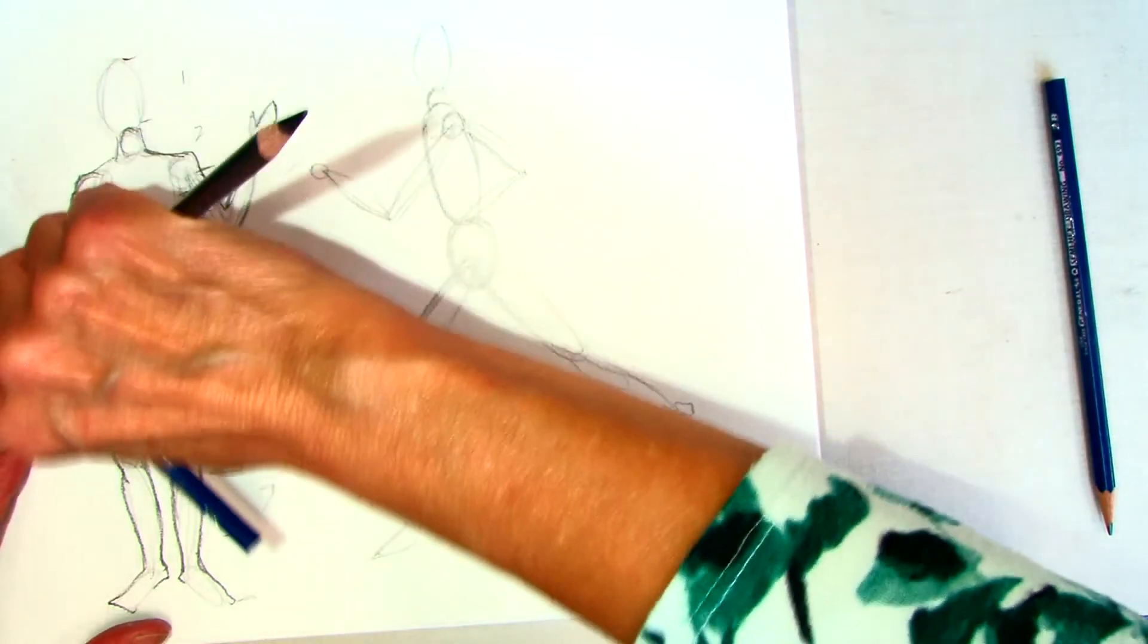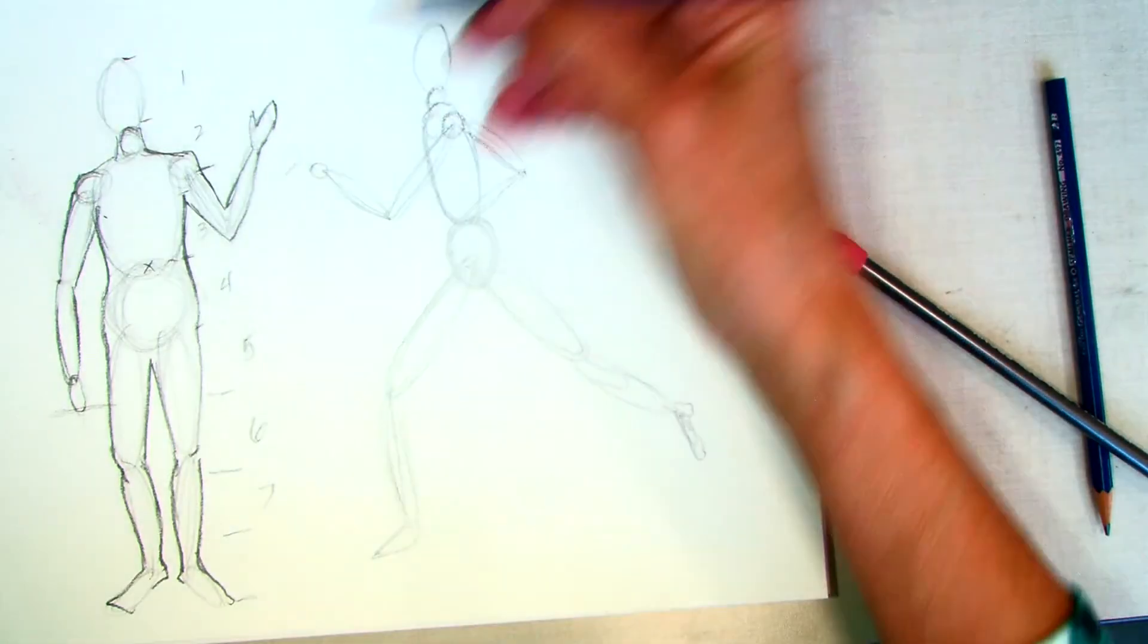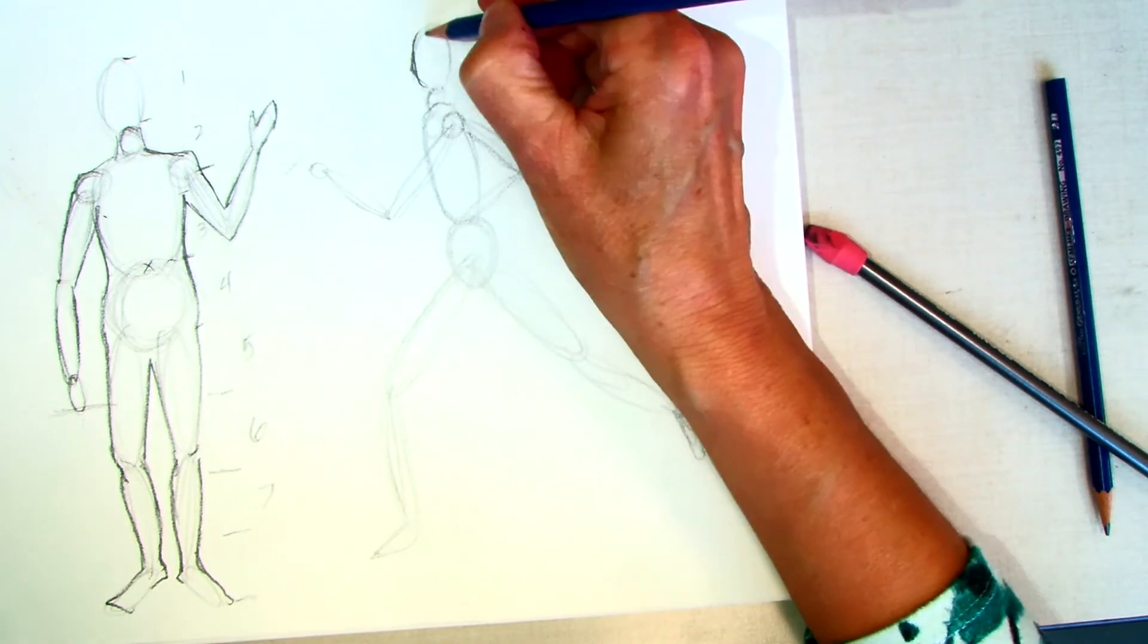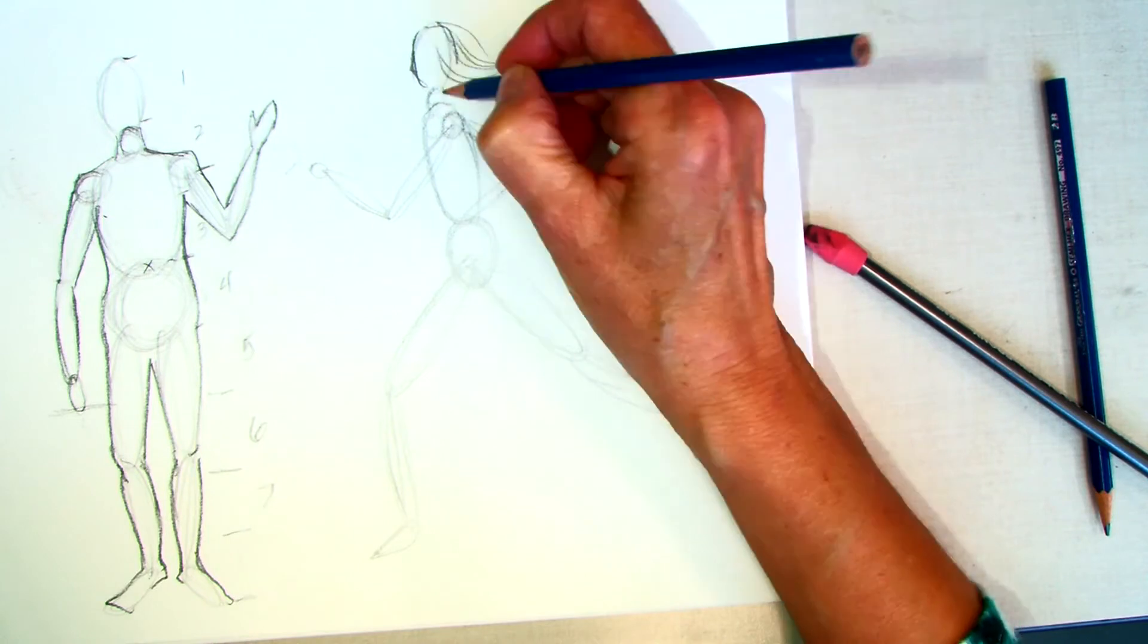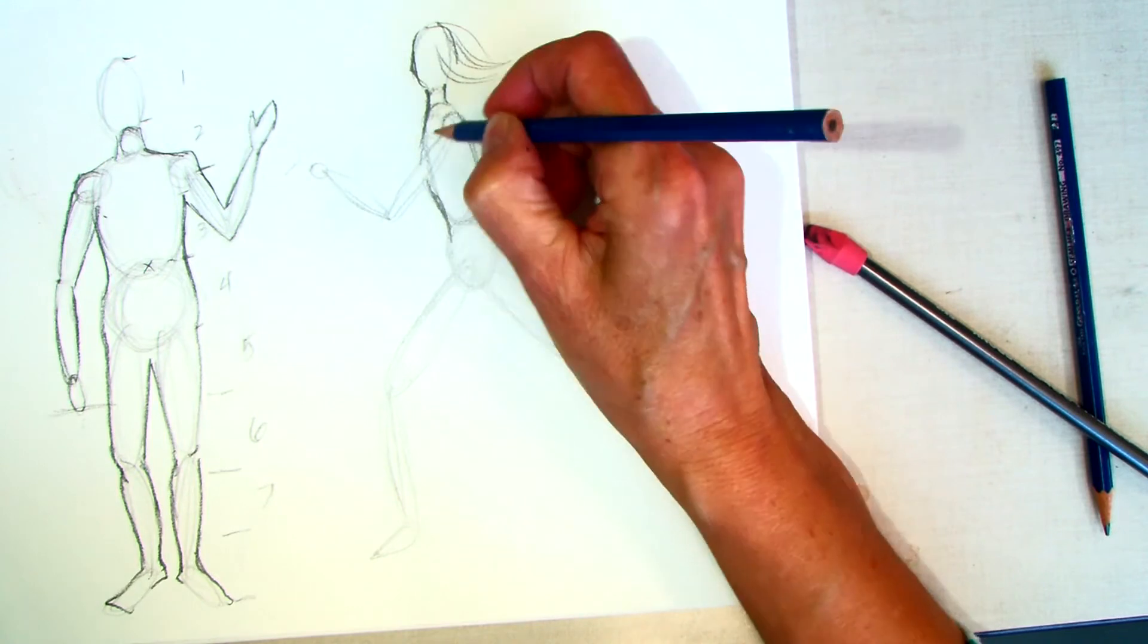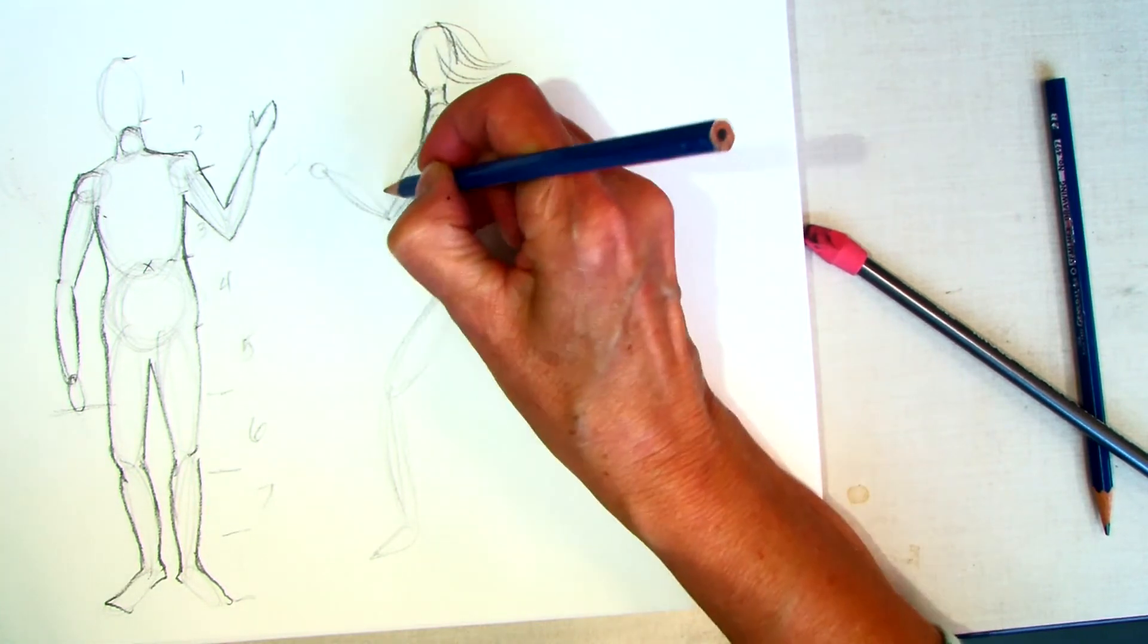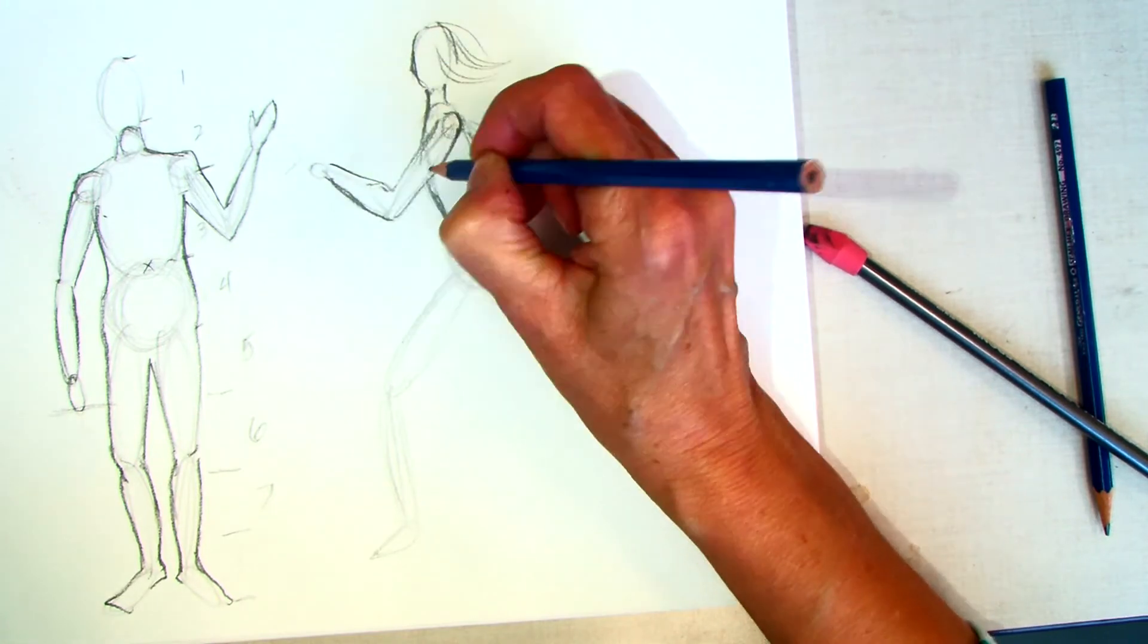You are just getting the form and using that to help you establish the pose that you're going for. This one again, obviously there'd be a face there. You can make her hair kind of flying back, neck, body, her arms. We would use that form again to create her arm, but think about what's going to look right.